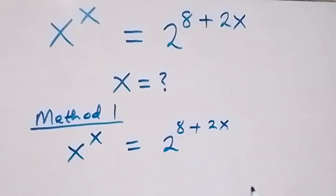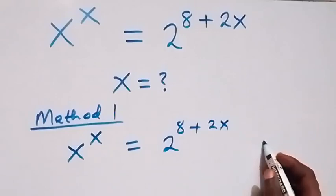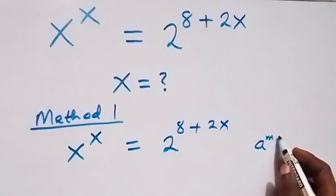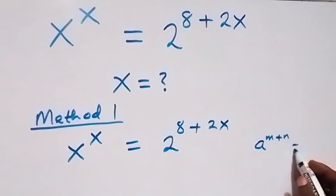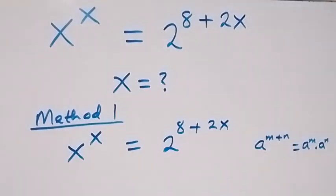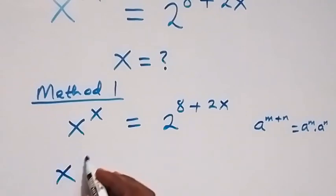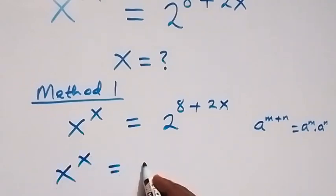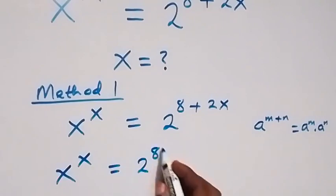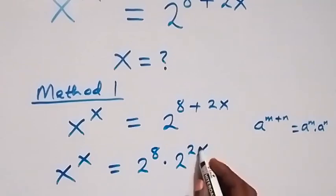From here, we can apply the law of indices when we have a raised to power n plus n. This will be equal to a raised to power n times a raised to power n. So this will become x raised to power x equals to 2 raised to power 8 times 2 raised to power 2x.